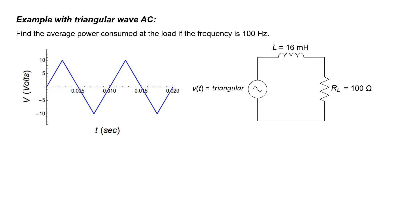We can't use RMS in order to find this power. The reason we can't use RMS is because of the inductor. The impedance of this inductor is jωL. We can't just calculate the RMS voltage of this triangular wave, use voltage division, and then calculate the voltage across the load resistor, because the impedance of this inductor is jωL. The fact that there is an omega in the inductance implies that there's only a single frequency.